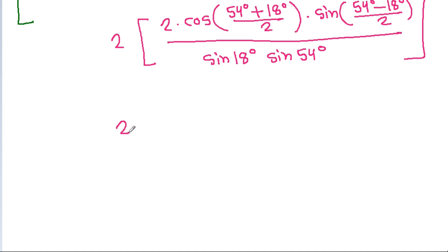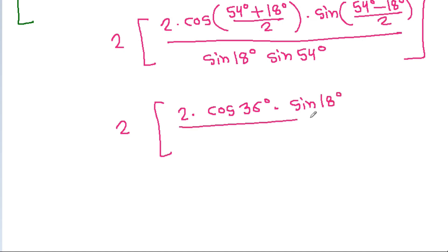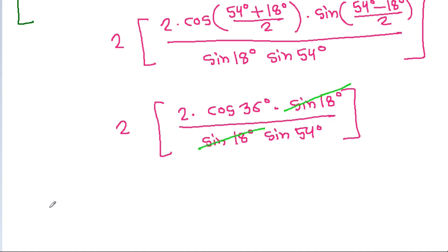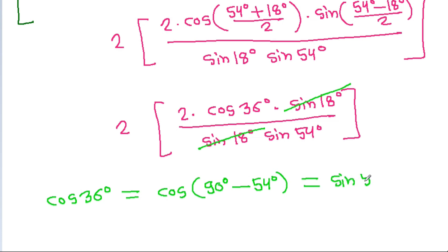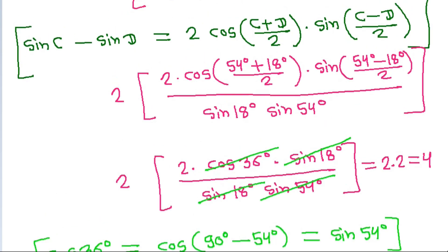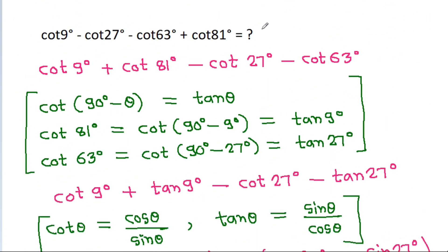So the expression becomes 2 times 2 times cos 36° times sin 18°, divided by sin 18° times sin 54°. Sin 18° cancels. And cos 36° equals sin 54° (since cos 36° = cos(90° - 54°) = sin 54°), so these cancel too. The result is 2 times 2, which equals 4.